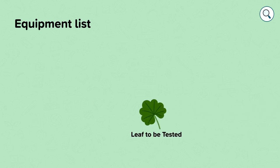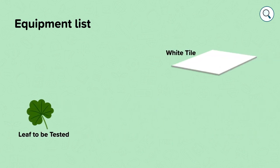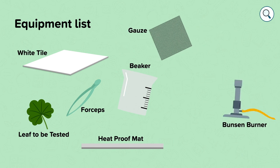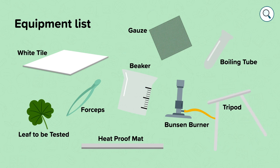Let's look at the equipment we're going to need to carry out this practical. We will need a leaf, a white tile, forceps, a heatproof mat, a beaker, gauze, a Bunsen burner, boiling tube and a tripod.